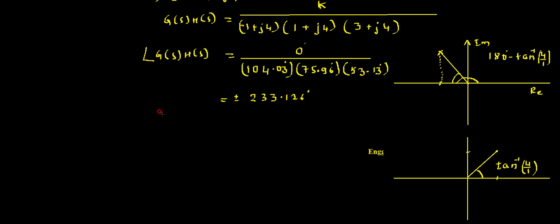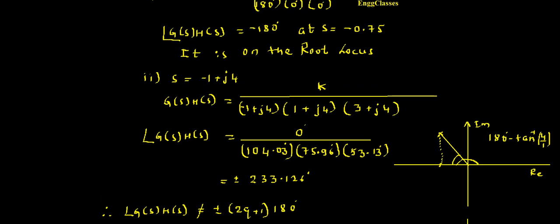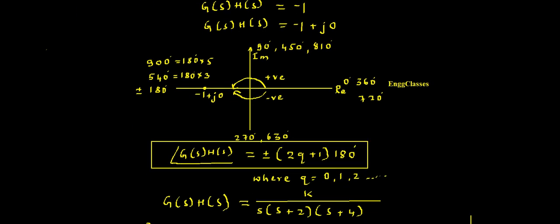Therefore I can conclude that the angle of G(s)H(s) = ±233.126 degrees, which is not equal to ±(2q+1)×180 degrees. That means 233 degrees is not an odd multiple of 180 degrees. Hence the point s = -1+j4 is not on the root locus. I have explained this numerical step by step. If there are any doubts, please let me know in the comment section. Thank you so much for watching.